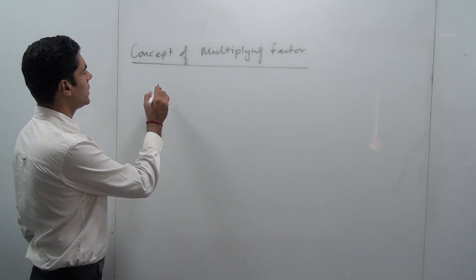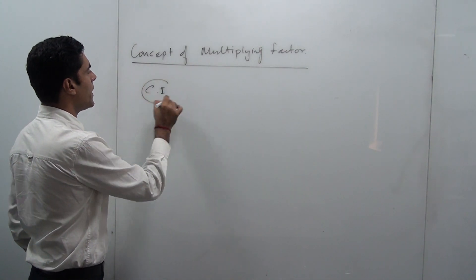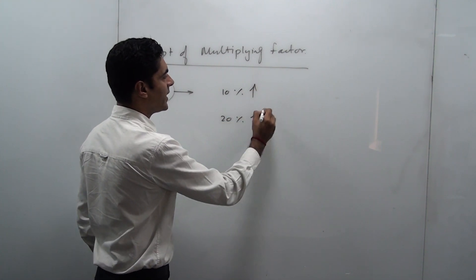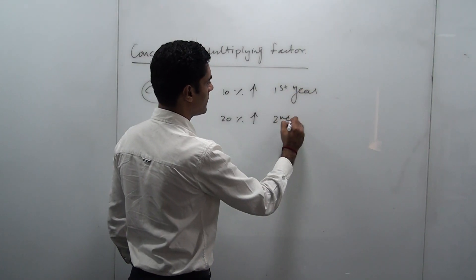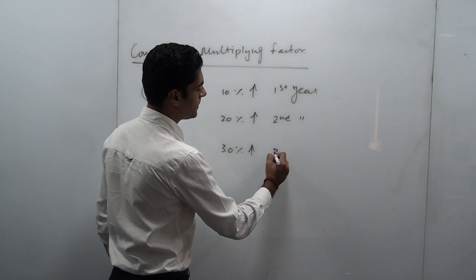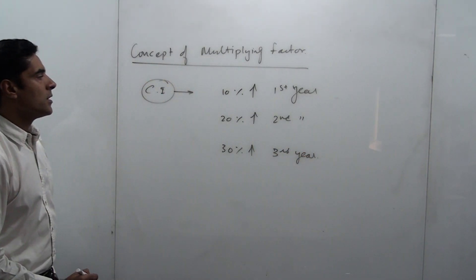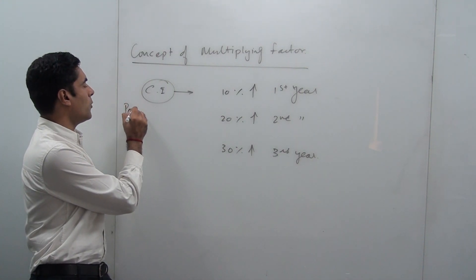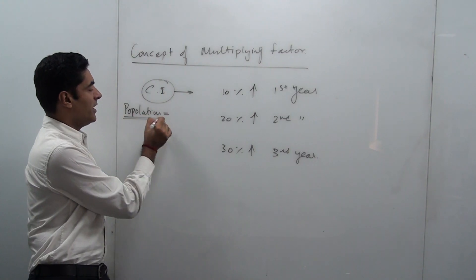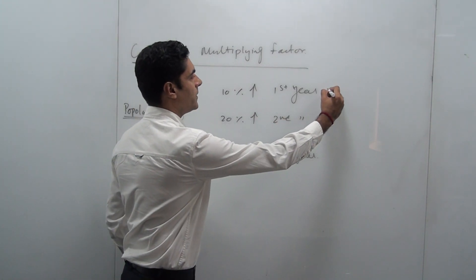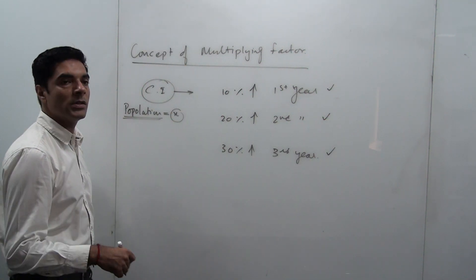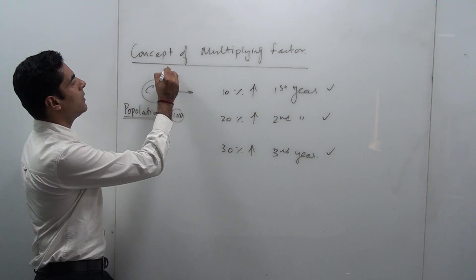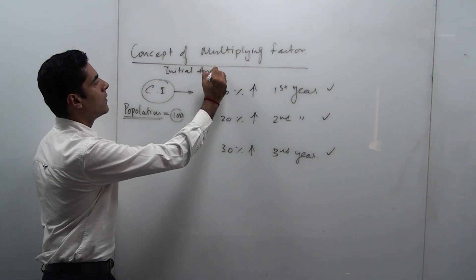In the case of compound interest, let's say I have kept a certain amount at an interest of 10% for the first year, 20% in the second year, and 30% in the third year. So if I want to find the percentage increase after 3 years — the question can also be framed as: the initial population of a town is X, increasing at 10% in the first year, 20% in the second year, and 30% in the third year. What is the percentage increase after 3 years? Let's say my initial population or initial principal amount is equal to 100.